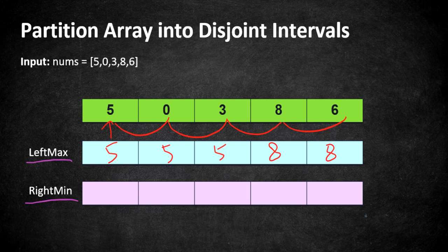Similarly, we update rightMin from right to left, storing the running minimum. Comparing 6 and 8 — 6 is the minimum. Comparing 6 and 3 — 3 is the minimum, so we update. Comparing 0 and 3 — 0 is the minimum. Comparing 5 and 0 — 0 is the minimum. Now we have both arrays updated with the maximum and minimum values at each position.